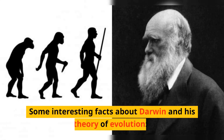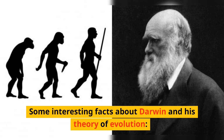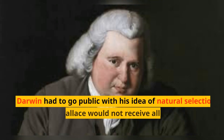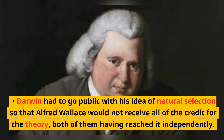Some interesting facts about Darwin and his theory of evolution: Darwin's questioning of the practice of human inbreeding was taboo, at least partially because of its implicit criticism of the royal family, since Queen Victoria had married her cousin. Darwin had to go public with his idea of natural selection so that Alfred Wallace would not receive all the credit for the theory, both of them having reached it independently.